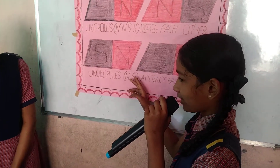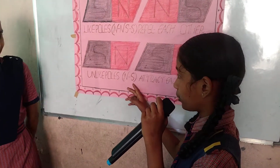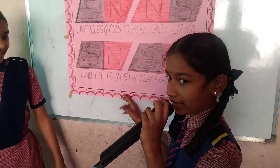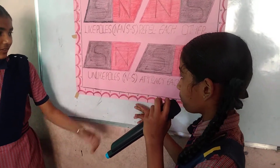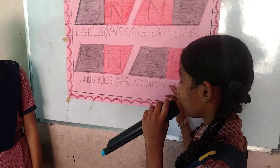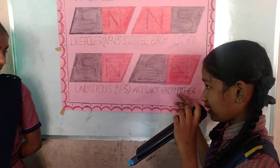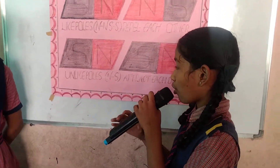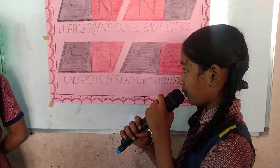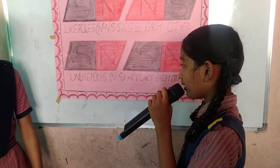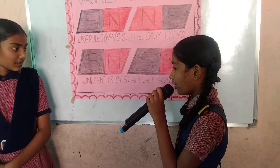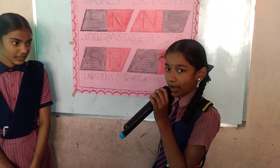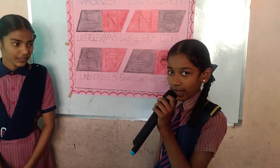This magnet has two poles. This magnet is facing the north pole and another magnet is facing the south pole. These are opposite poles, and opposite poles are attracting each other. This is my project. Thank you.